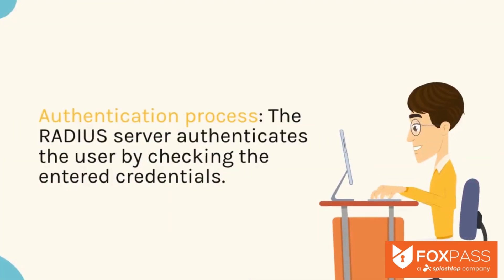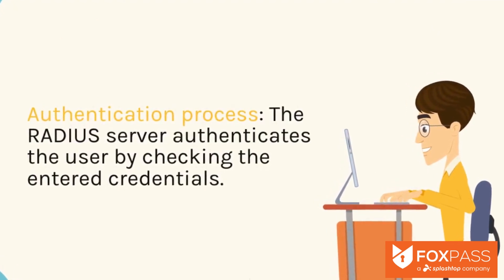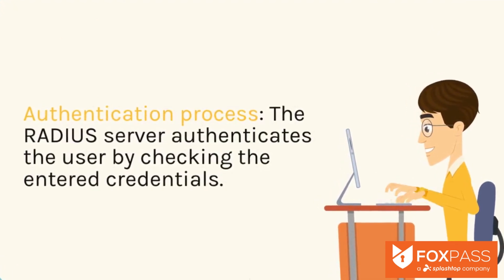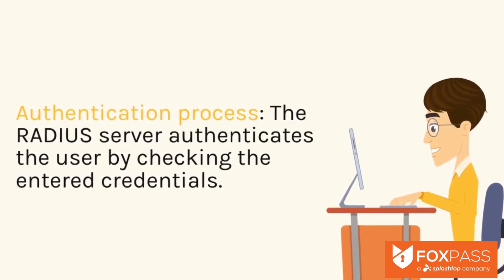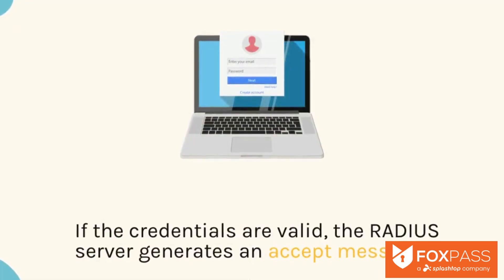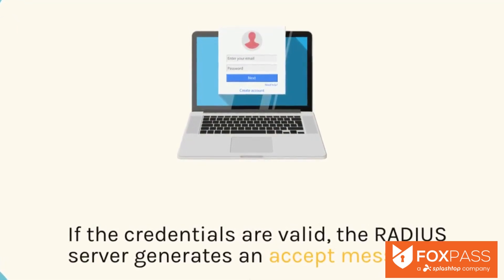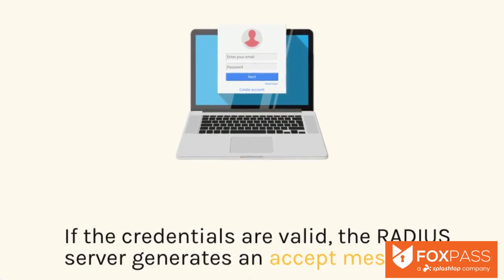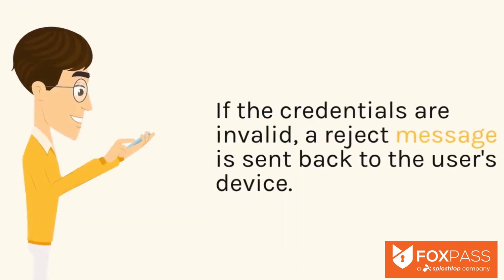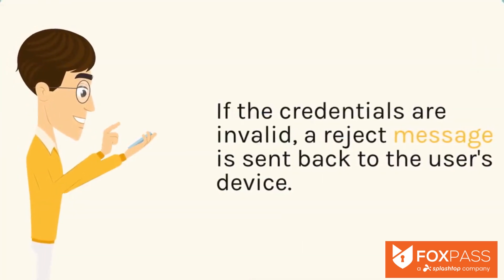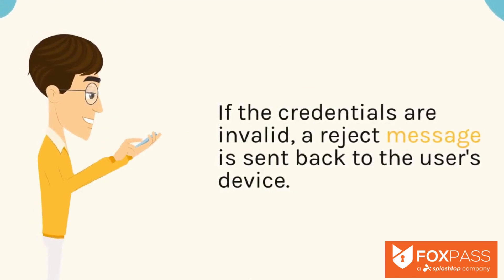Step 4: Authentication process. The RADIUS server authenticates the user by checking the entered credentials. If the credentials are valid, the RADIUS server generates an accept message. If the credentials are invalid, a reject message is sent back to the user's device.